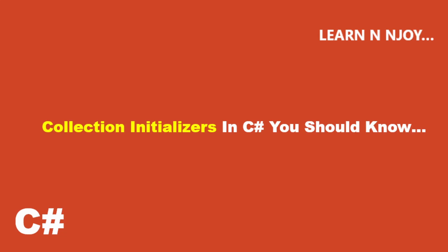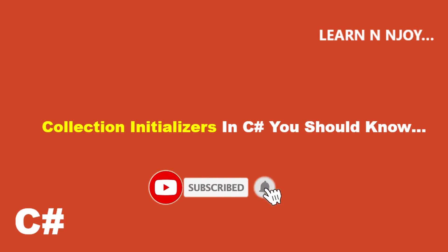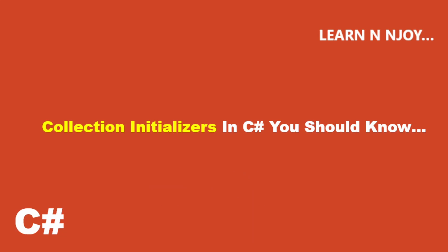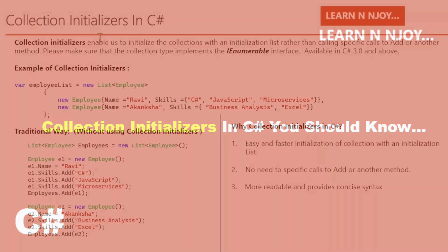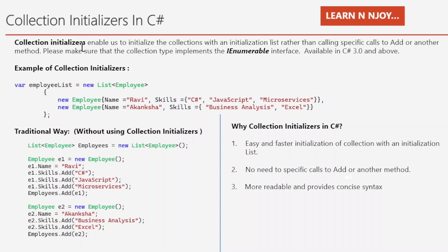Today I am going to discuss collection initializers in C#: what it is, and how and when to use it. Collection initializers enable us to initialize a collection with an initialization list rather than calling specific calls to add or another method. Make sure that the collection type implements the IEnumerable interface. It's available in C# 3.0 and later versions.